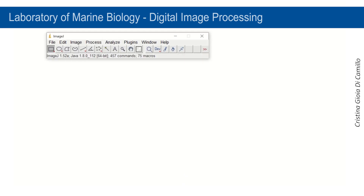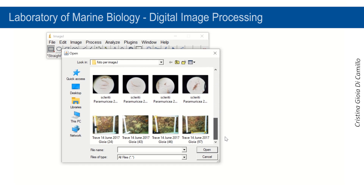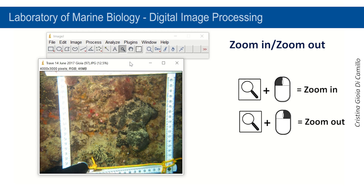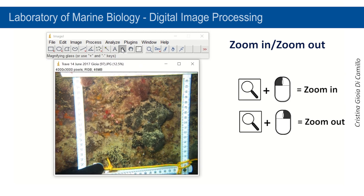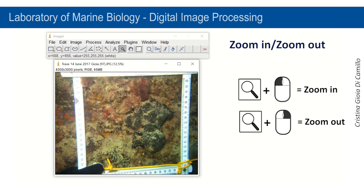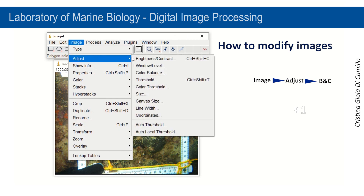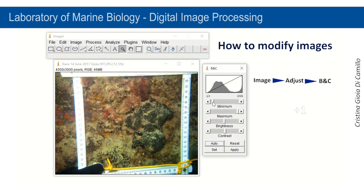After installing the software, launch it by clicking on its icon. Click on File on the menu bar and then click on Open, then select a picture that you want to process. Selecting Image from the menu bar, you can change image type, adjust brightness and contrast, balance colors, resize or rotate your photo, and also add an overlay.